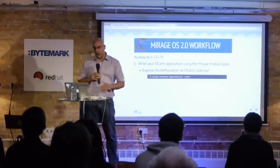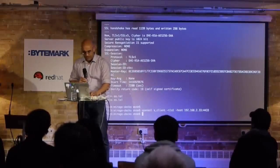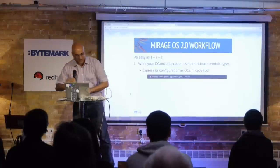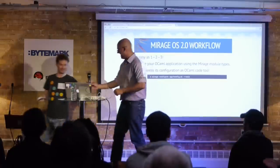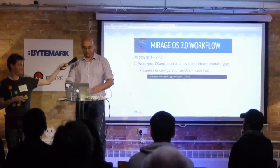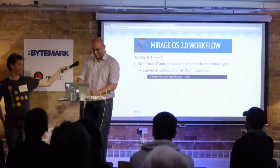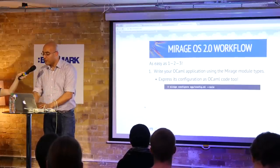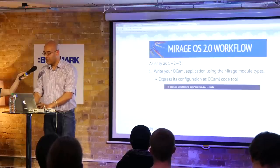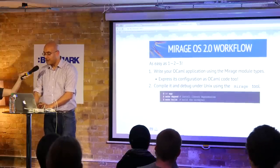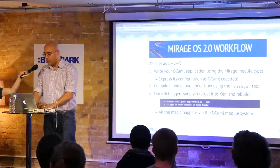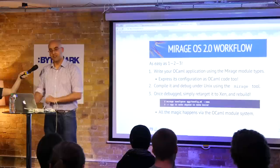So how does this work? The Mirage OS workflow is that I write my OCaml application using some Mirage concepts, and all I have to do is type 'mirage configure' for this particular application under Unix. I can then recompile that same application under Unix to debug it. Then from the same source code, I can run 'mirage configure' with '--xen', and without any changes this thing will recompile. So how does that work?